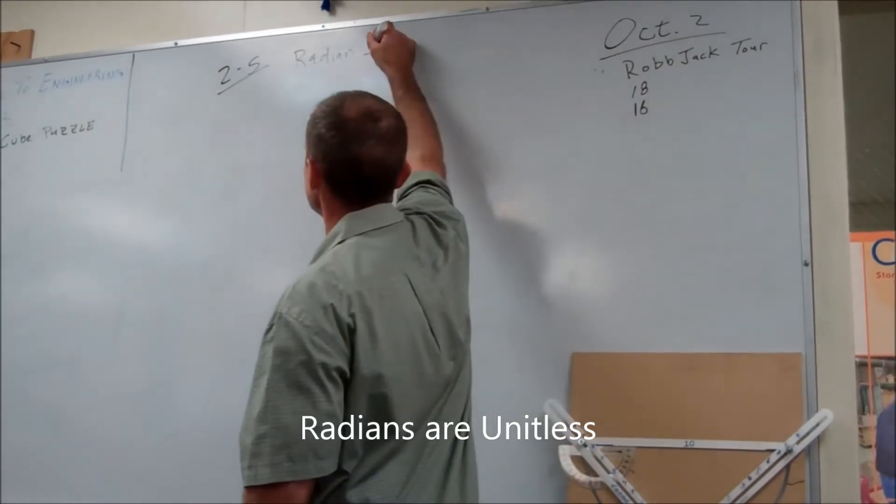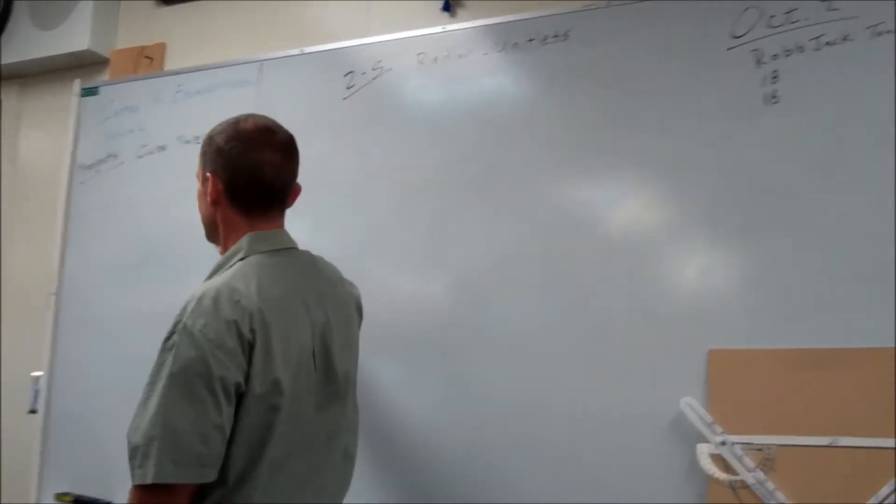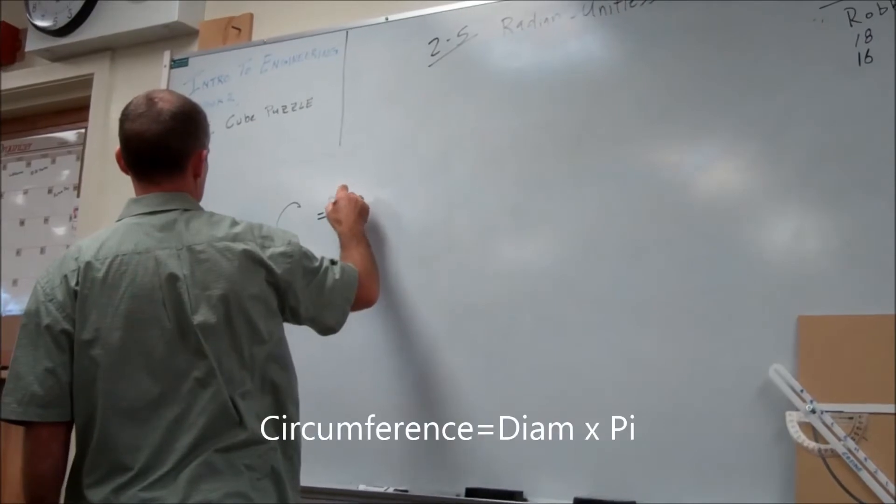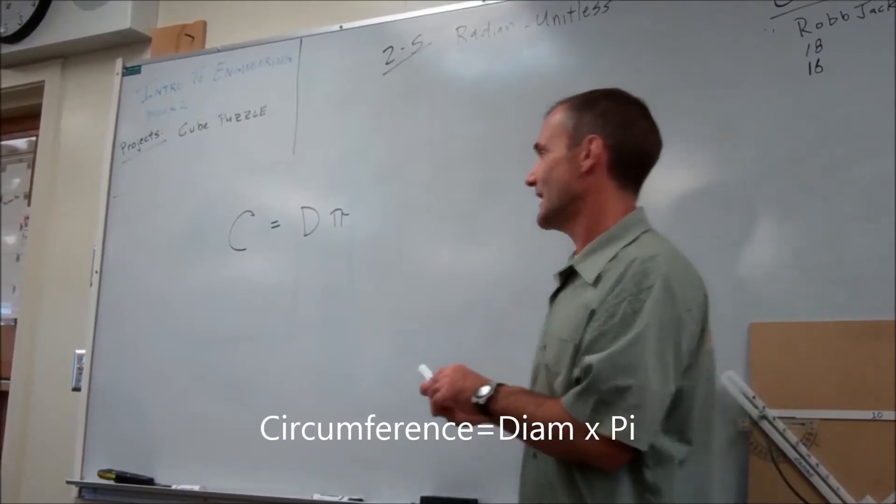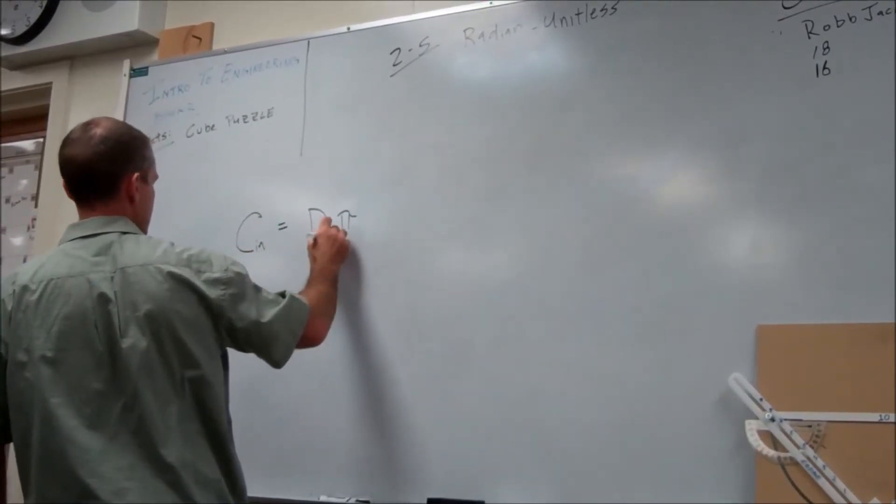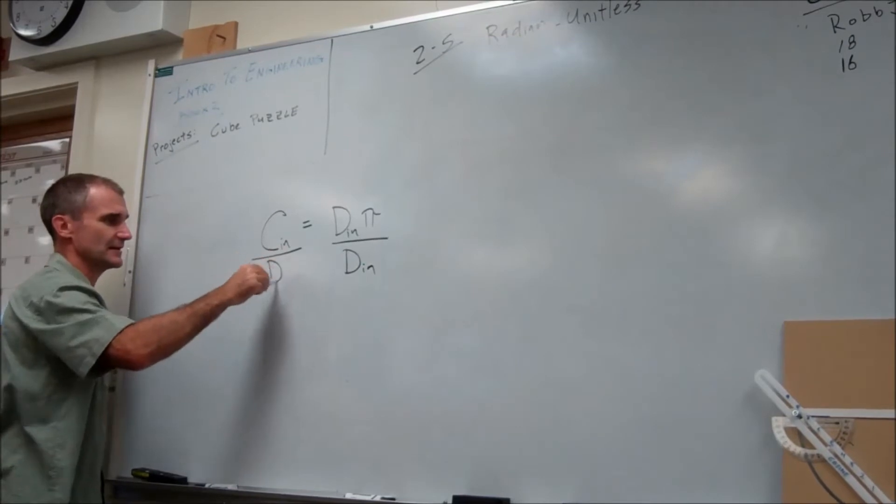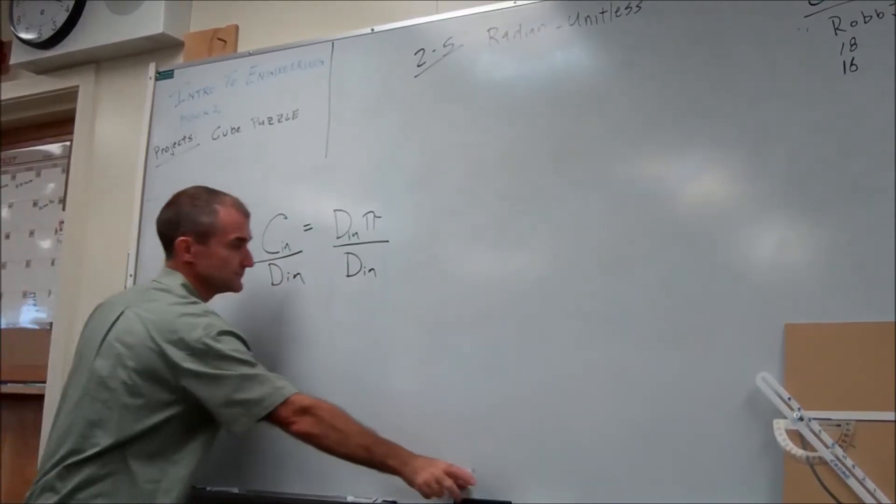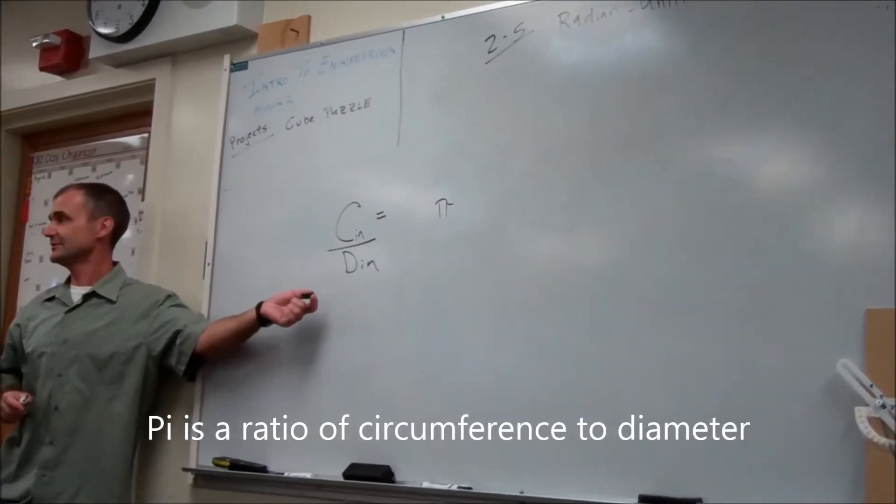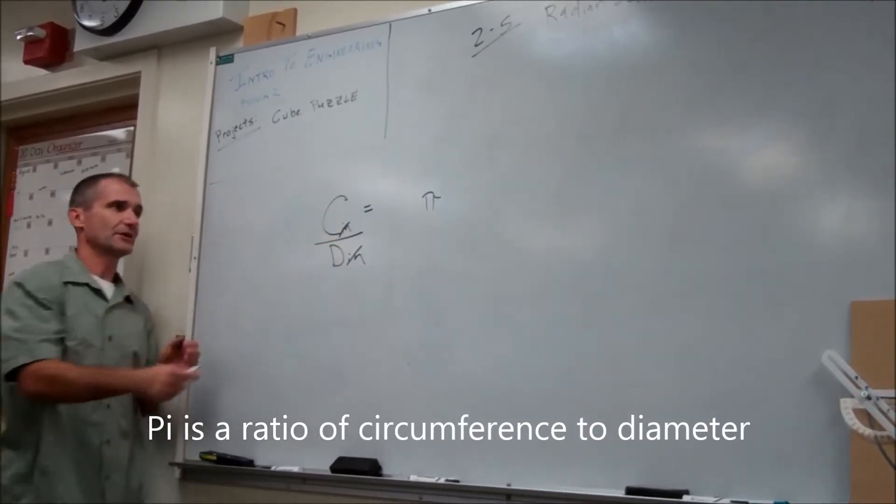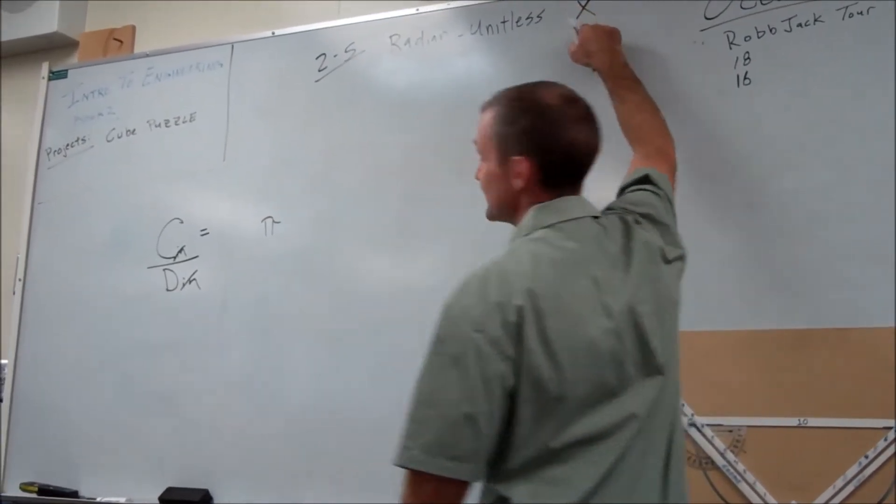The most important thing to know about radian measure is that it is unitless. There are no units attached to radians. Circumference of a circle equals diameter times pi. If I were to measure both the circumference and diameter, I would measure both in inches. If I isolate pi, I divide both sides by diameter in inches. These would cancel. I could see that pi is the ratio of circumference to diameter, and my units cancel. There are no units attached to pi because they cancel.